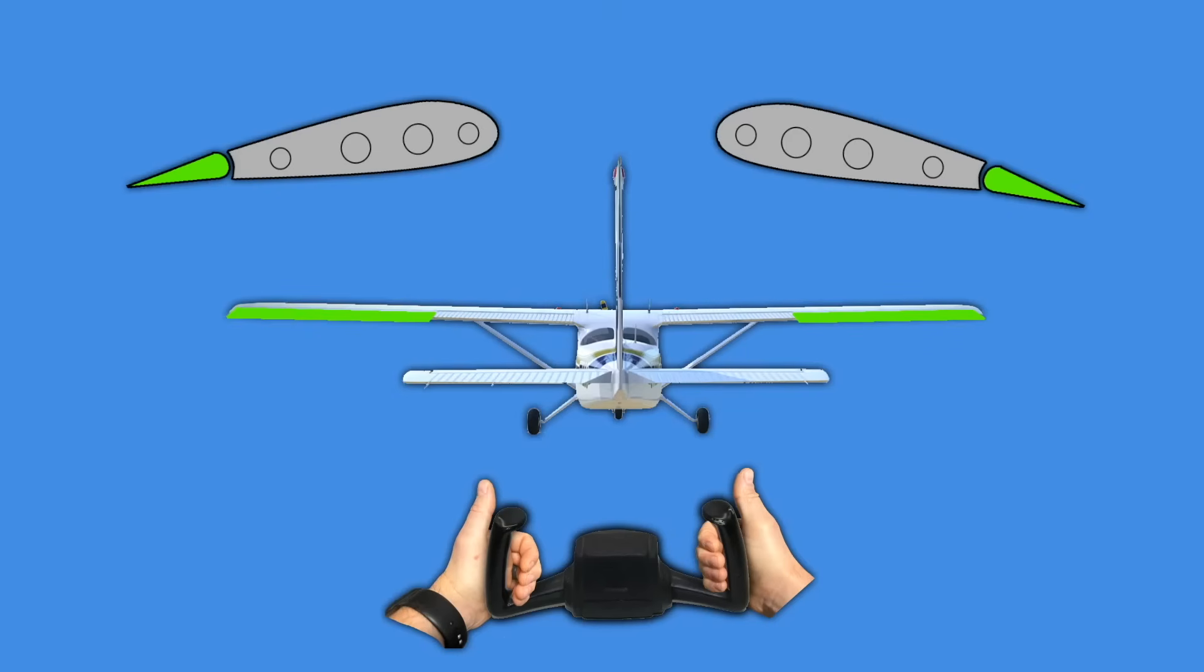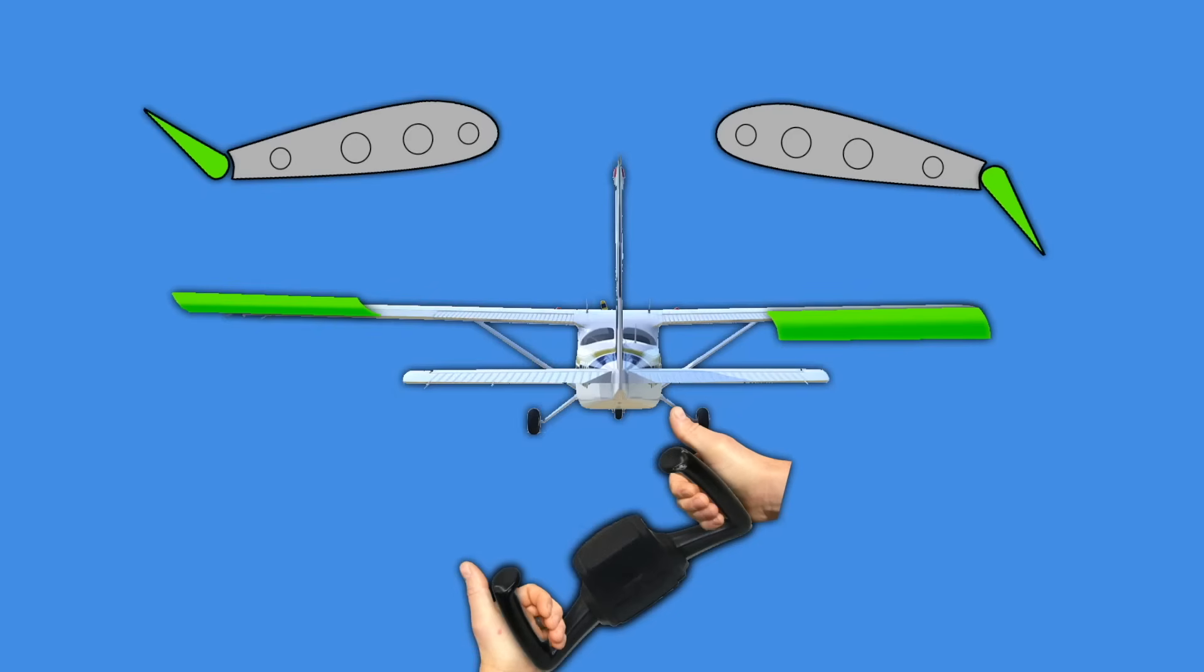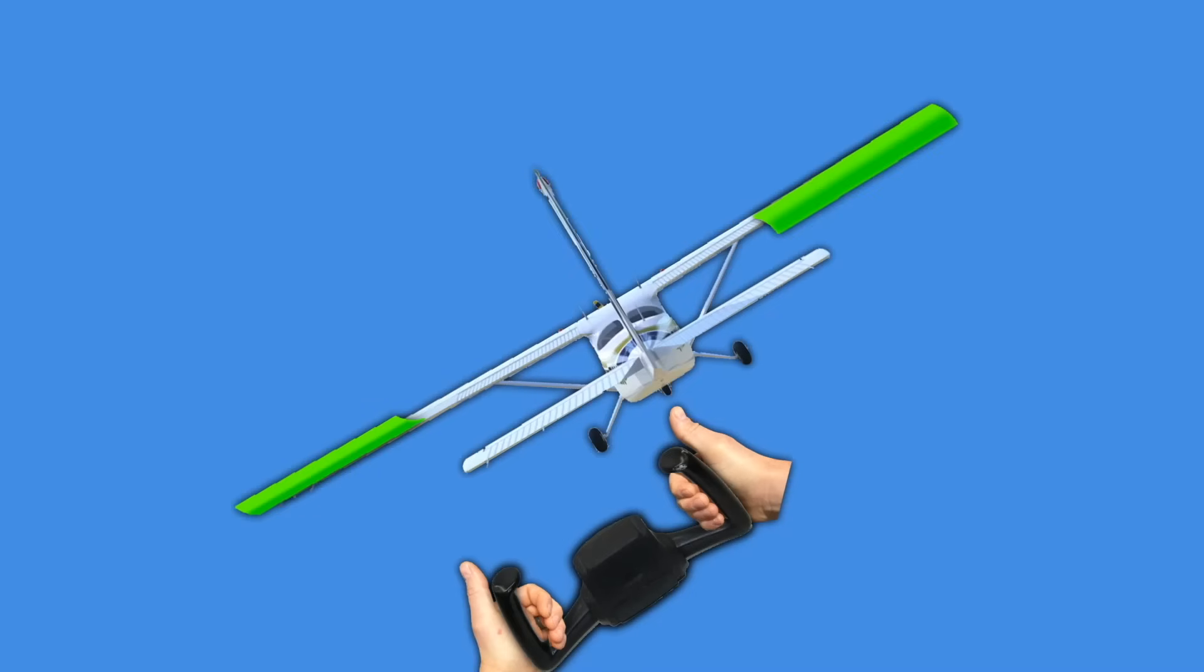This is important because anytime we lower an aileron we increase the camber of that wing and this means that this wing now creates more lift while the aileron on the other side comes up and creates less lift. This in turn rolls the aircraft whichever direction you want to go.